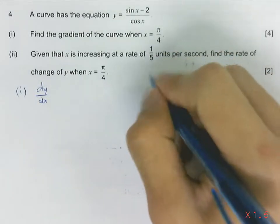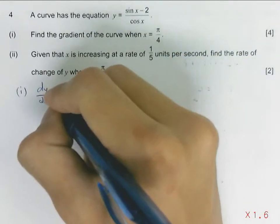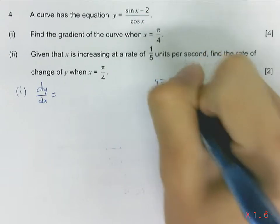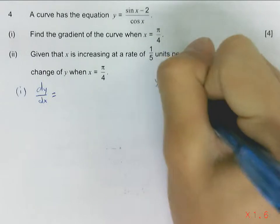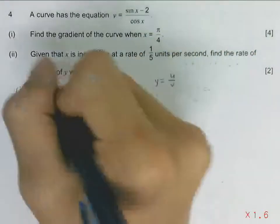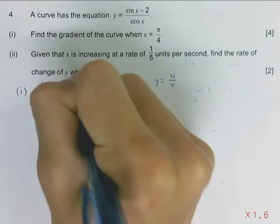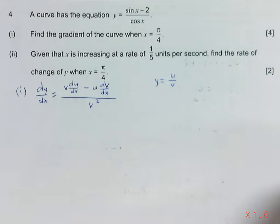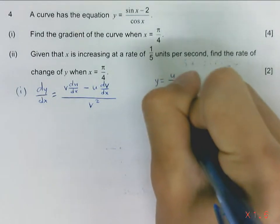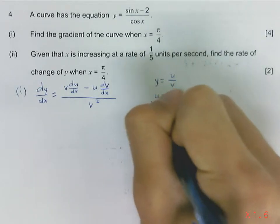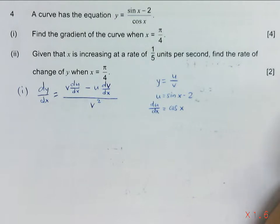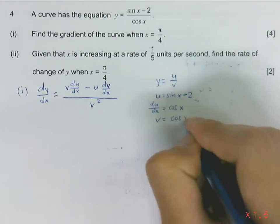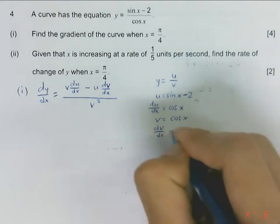Now before we find this, we can actually label the denominator and numerator as u over v. So following the formula, we are just finding v du/dx minus u dv/dx. So u equals sine x minus 2, du/dx will simply give us cosine x. Since when you differentiate any constant, it will give you zero. And v will be cosine x, so dv/dx will simply be minus sine x.